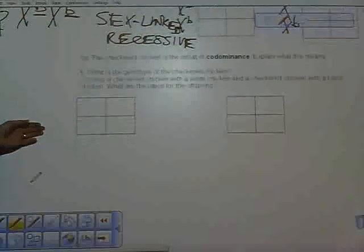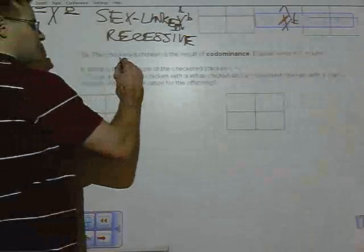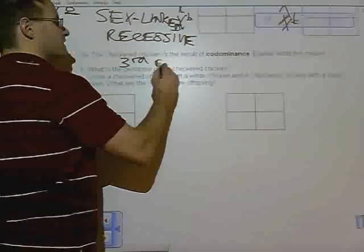This next problem is not on your worksheet if you're a blended student, but it is on your worksheet if you are a regular classroom student. Blended kids had to make their own problems. Number five says the checkered chicken is a result of co-dominance. Explain what this means.